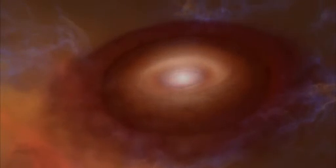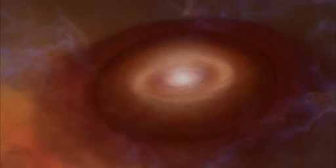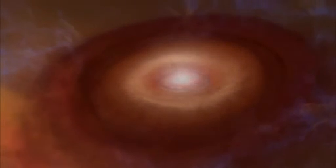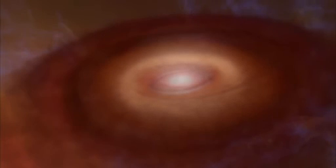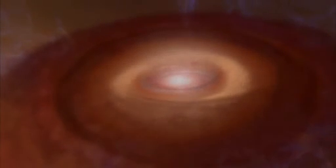Elsewhere in the cloud, another protostar is preparing to build planets. As the cloud that created the protostar collapsed, it flattened into a disk. The disk we see here is 600 times the size of Earth's orbit around the Sun.